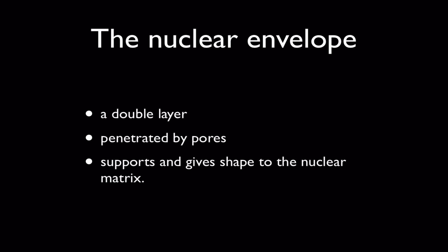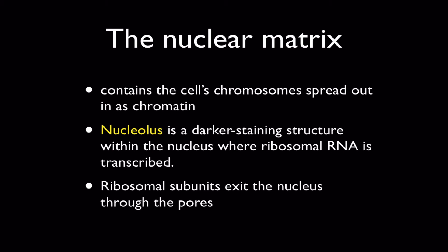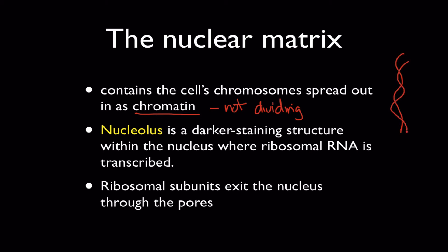Let's look at the nuclear envelope in a little bit more detail. First of all, it's a double layer, which means it's got two membranes surrounding it, and they're penetrated by pores. The job of the nuclear envelope is to give structure, support, and shape to the nuclear matrix inside. The nuclear matrix is where the cell's genetic material is stored. The genetic material exists in a form called chromatin when the cell is not dividing, which means the DNA is spread out — you can think of it as kind of dissolved — in a form where it can be read and accessed by the cell's machinery for either replication or transcription.